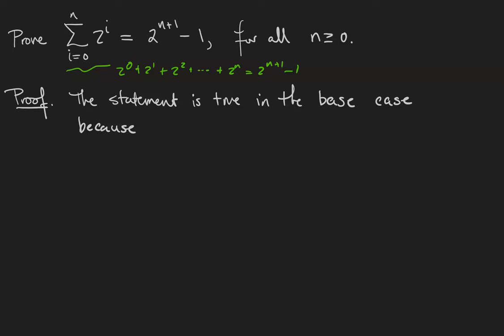The statement is true in the base case because the sum from i=0 to 0 of 2^i is equal to just 2⁰, there's only one term in the sum. 2⁰ is 1, but 1 is the same as 2¹ - 1. So this is an example of the statement we're trying to prove when n is equal to 0 and it's true. Therefore, the statement is true in the base case. The base case is nice because all you have to do is plug in a number and make sure the resulting statement is true.